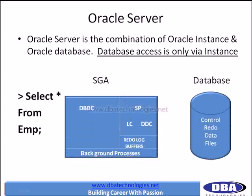For example, if a user is trying to execute 'SELECT * FROM employee', first they must make a connection, which invokes the user process. Once it gets validated with the database, a server process gets created. The server process does the required job — selecting all the information from the employee table from the database — and puts that information into the instance, from where it is sent back to the user. Each user process gets its own server process, which is responsible for answering all queries while ensuring adequate privileges.